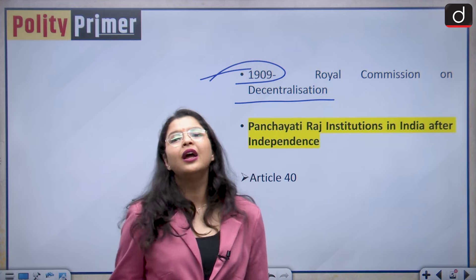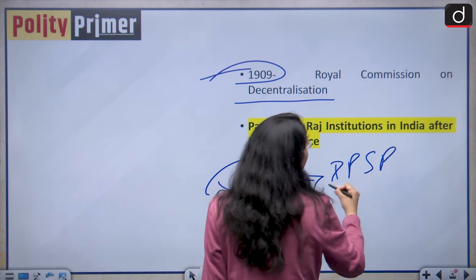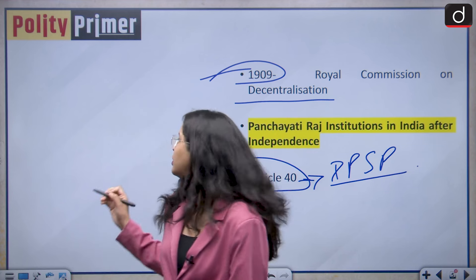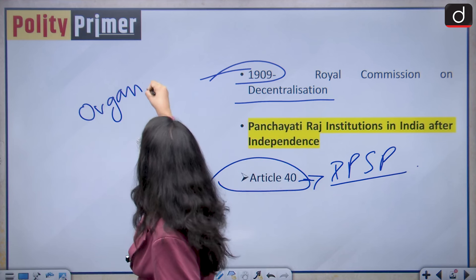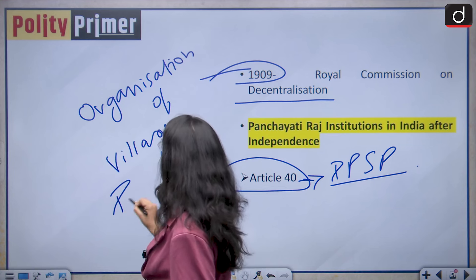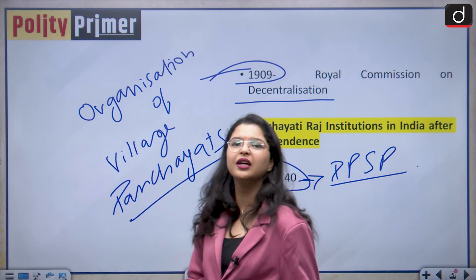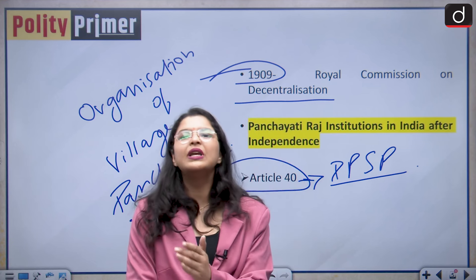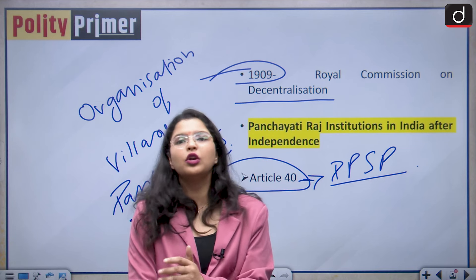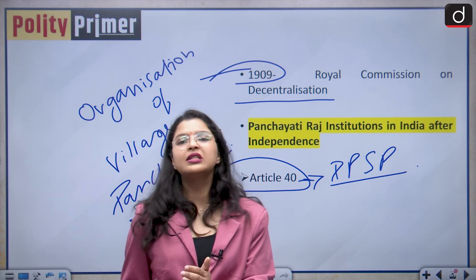After independence, we included Article 40 in our Directive Principles of State Policy, which talks about the organization of village panchayats. As we all know, DPSPs are not justiciable in nature, meaning the state has to make a law for enforcing them. You cannot go to the courts and say enforce my directive principles of state policy — they are non-justiciable in nature.